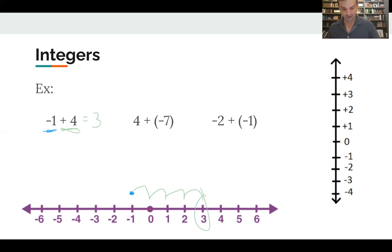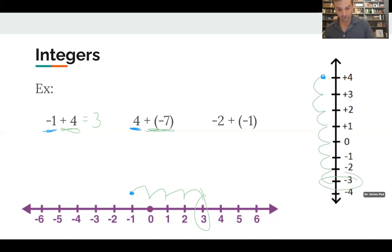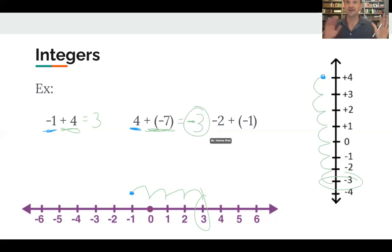Next I'll do this on the vertical number line. We're starting at four — you've got four bucks. Unfortunately, you must add a debt: you borrow seven dollars, so your money goes down by seven. When we add a negative number, we go down the number line — one, two, three, four, five, six, seven — and our answer is negative three. That negative sign is important; negative three is a totally different number than three.